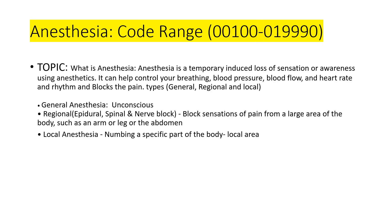Today I have chosen anesthesia, and the code range is 00100 to 01990. Anesthesia is a temporary induced loss of sensation or awareness using anesthetics. It can help you control your breathing, blood pressure, blood flow, heart rate, and rhythm, and mainly it blocks the pain. There are three types: general anesthesia, which makes you completely unconscious; regional anesthesia, which has three subtypes — epidural, spinal, and nerve block — that block sensation from large areas such as the arm, leg, or abdomen; and local anesthesia, which numbs a specific part of the body.